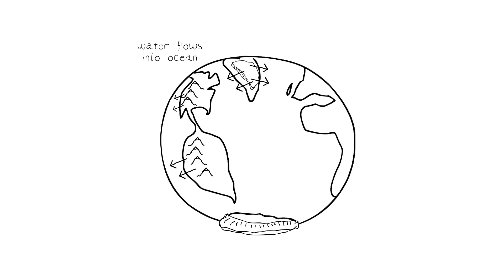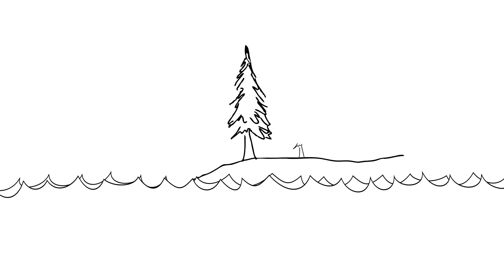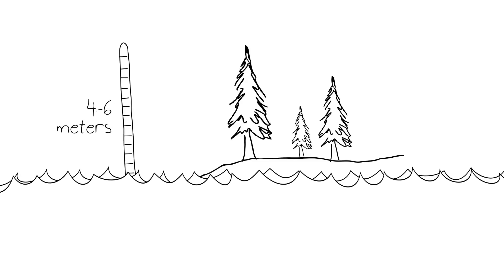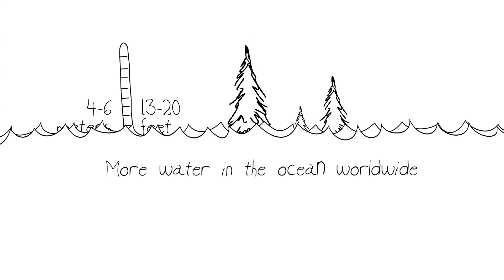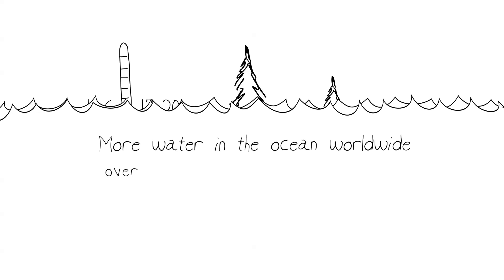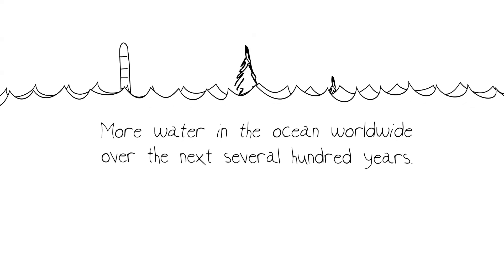The frozen elephant in the room is Antarctica, because almost all of the ice there is on the continent, which means that when it melts, it will add enormously to the amount of water in the ocean. Even partial melting of Greenland and Antarctica together could result in 4 to 6 meters, or about 13 to 20 feet, more water in the ocean worldwide. But it could take several hundred years for that.